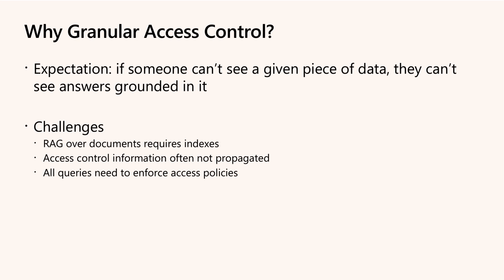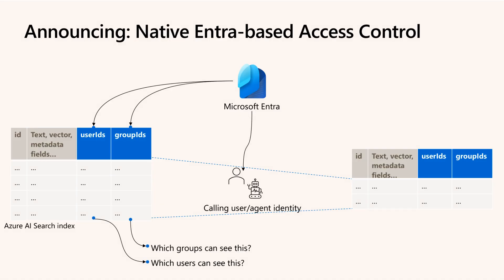The session highlighted new native support for Entra-based document access control that automates filtering and group expansion, greatly simplifying secure document-level permissions. Secure access control works by embedding metadata specifying which users, groups, or roles can access each document. The system automatically expands group memberships and applies filters at query time, showing only authorized content. A demo created an ACL demo search index linked to Azure RBAC, also showing how native permissions from Azure Data Lake Storage Gen2 flow directly into the search index, eliminating extra setup and maintaining security synchronization.